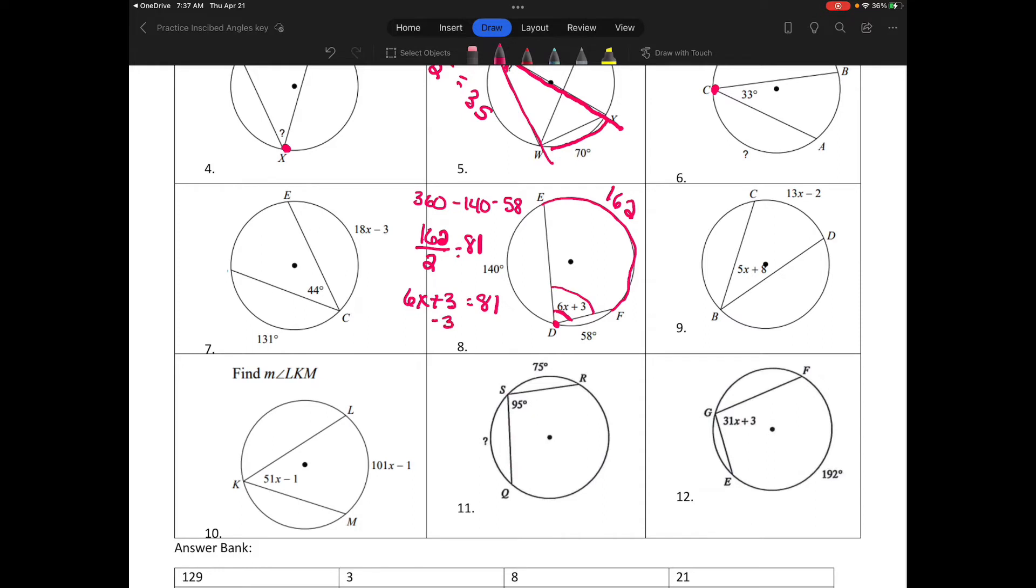Then I would solve for x. Subtract 3 from both sides, which gives me 78. So 6x equals 78, and then divide that by 6, and x is equal to 13. That should be in your answer bank.